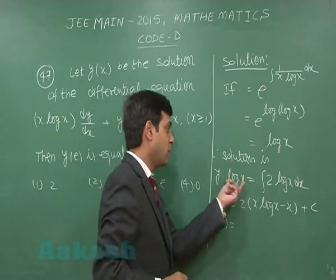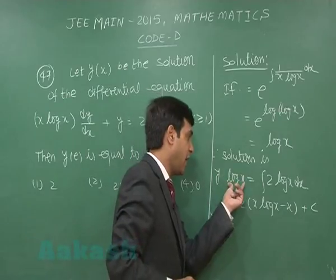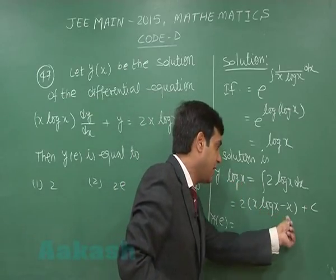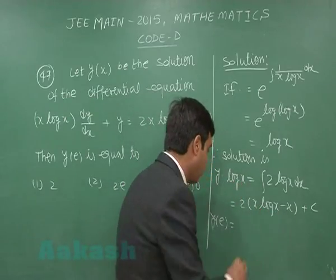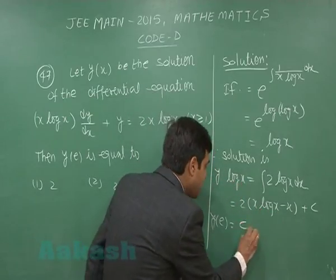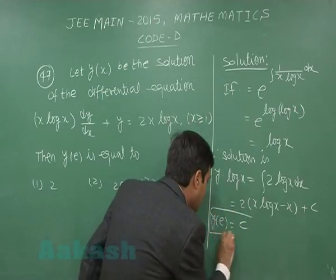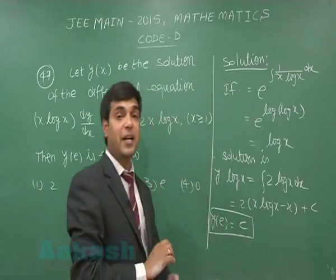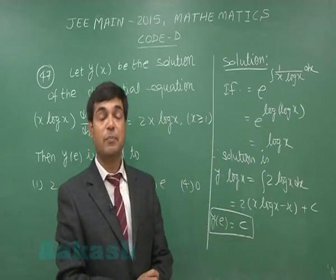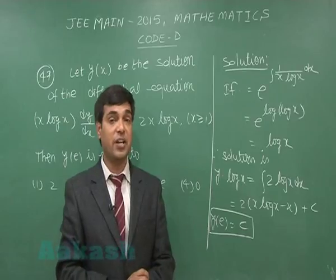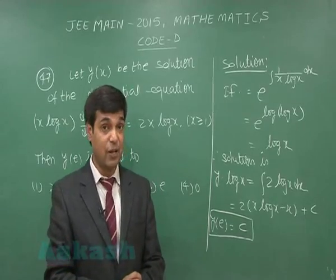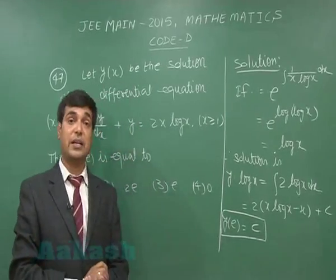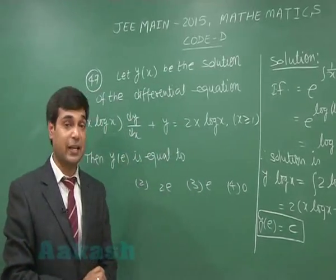The question asks for the value of y when x = e. On substituting x = e: log(e) = 1, and 2(e·log(e) − e) = 2(e − e) = 0. So the answer comes as c, a constant. Some initial value condition is missing in order to find the constant of integration c.